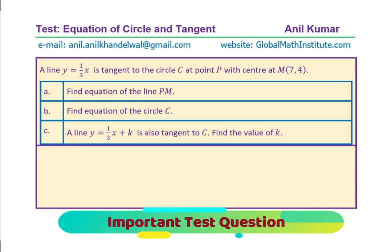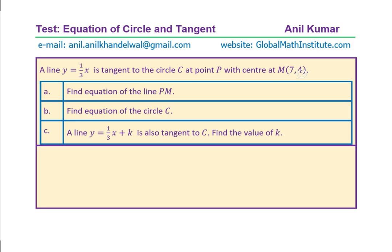Here is the second question, which is slightly more complicated. A line y = (1/3)x is tangent to the circle C at point P, with the circle C having center at M(7, 4). Find the equation of the line PM, find the equation of the circle C. A line y = (1/3)x + K is also tangent to the circle C — find the value of K.